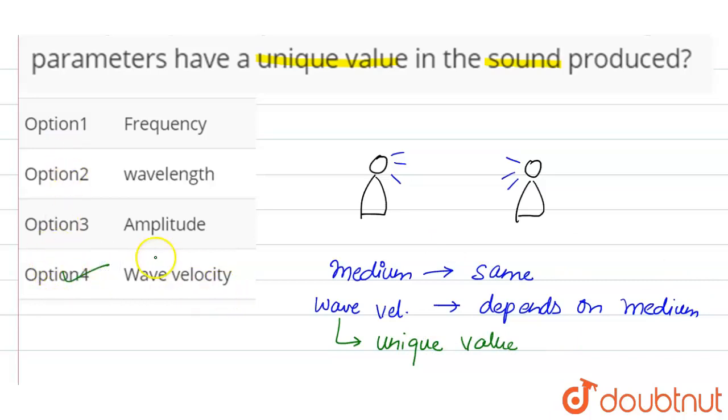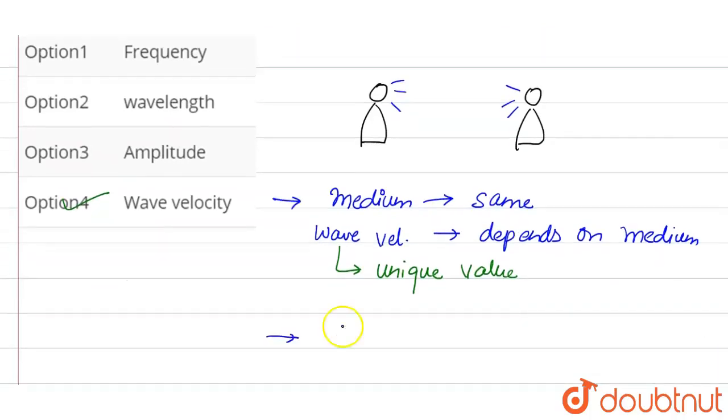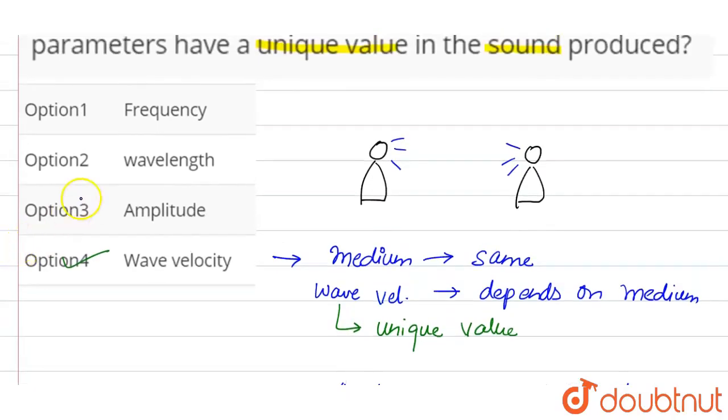Now the amplitude depends upon the energy that you put to produce the sound. So the amplitude depends upon the energy that you or your friend put to produce sound. That may differ, so option number three is wrong. It won't have unique value for both of you.